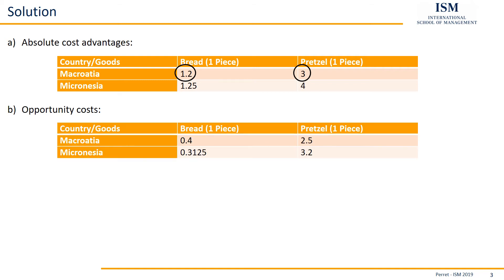Then we do the same thing the other way around: for pretzels in Macroasia, we divide the 3 for pretzels by the 1.2 for bread. And the same for Micronesia — 1.25 divided by 4 gives the opportunity cost for bread in Micronesia, and 4 divided by 1.25 gives 3.2, the opportunity cost for pretzels in Micronesia.